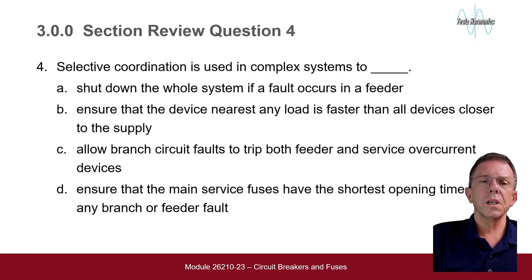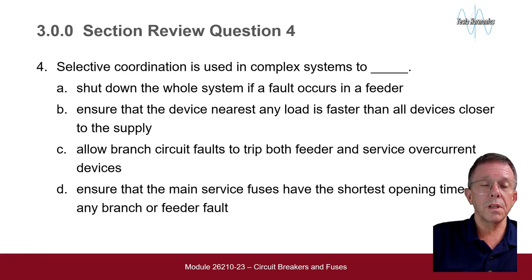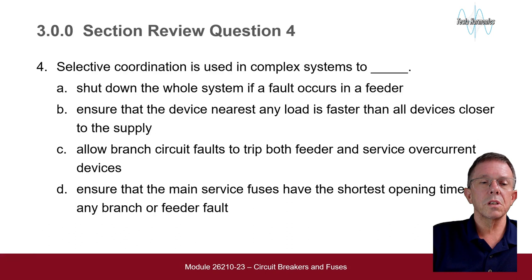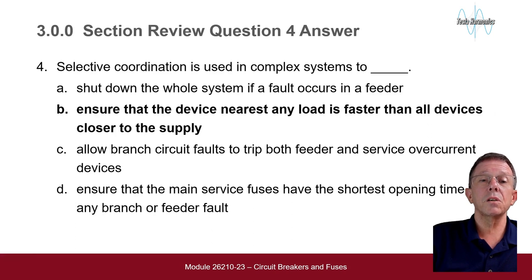Selective coordination is used in complex systems to: shut down the whole system if a fault occurs in a feeder; ensure the device nearest any load is faster than all devices closer to the supply; allow branch circuit faults to trip both feeder and service overcurrent devices; or ensure that the main service devices have the shortest opening time for any branch or feeder fault. The answer is B — ensure the device nearest any load is faster than all devices closer to the supply.